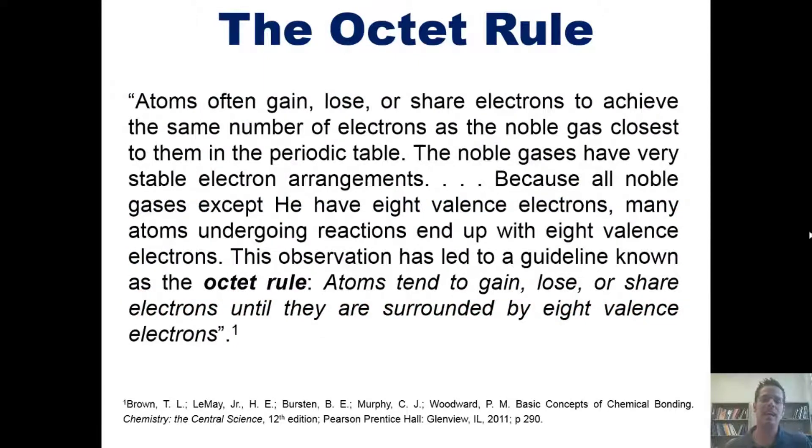According to our text, atoms often gain, lose, or share electrons to achieve the same number of electrons as the noble gas closest to them in the periodic table. But you might wonder why. The reason I speculate is because they have that sort of magical sweet spot in which they have just the right number of protons in their nucleus ratio to the most beautifully balanced number of electrons in their outer orbitals.